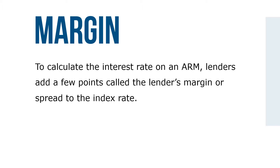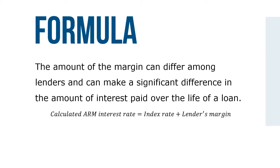The amount of the margin can differ among lenders and can make a significant difference in the amount of interest paid over the life of a loan. The calculated ARM interest rate equals the index rate plus the lender's margin.